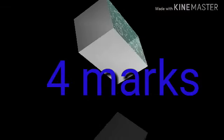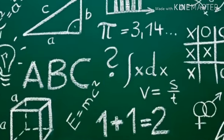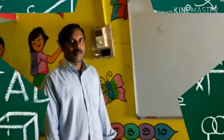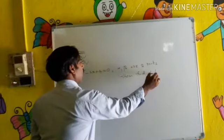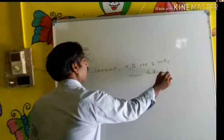12th Question: When axes are rotated at an angle pi by 4, find a transformed equation of 3x square plus 10xy plus 3y square equal 9.